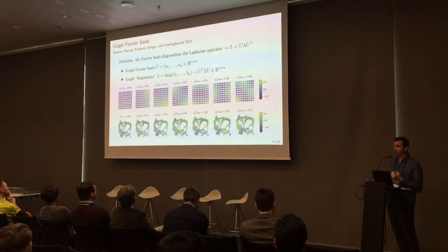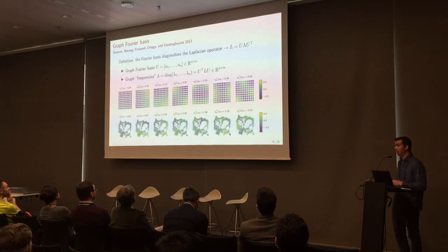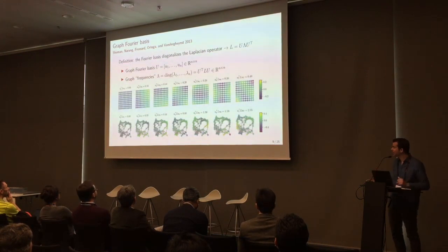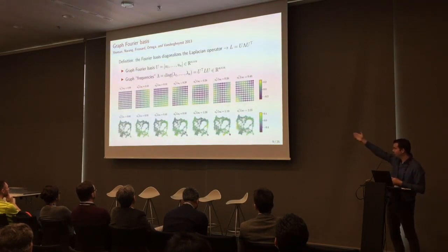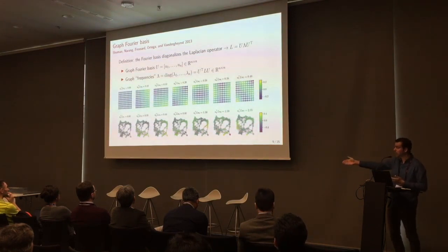Another tool we need is the Fourier transform. If you've done signal processing or analysis — like solving the heat equation — you've probably encountered this. One useful property is that it diagonalizes the Laplace operator. Since our graph is finite, the Laplace operator is a finite-size matrix. The eigenmodes of this matrix are vectors that vary across the graph: the first is constant, then they vary very little, and increasingly more and more — just like classical Fourier modes.